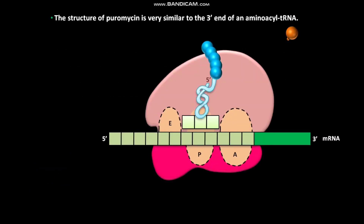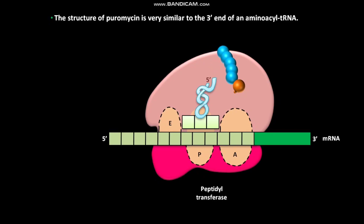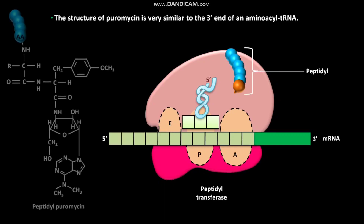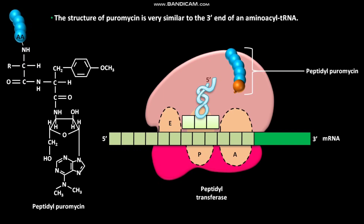The structure of puromycin is very similar to the 3' end of an aminoacyl tRNA. This structural similarity enables puromycin to bind to the ribosomal A site. In the presence of peptidyl transferase, puromycin forms a peptide bond with the amino acid of the peptide chain. As a result, peptidyl puromycin is produced.